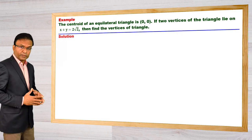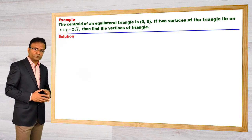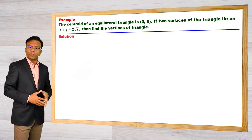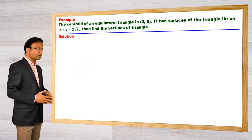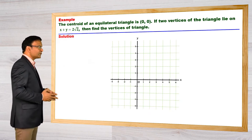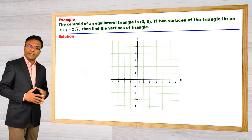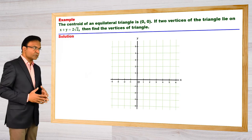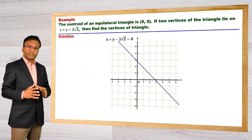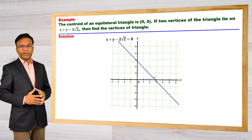We have here an equilateral triangle. One of the sides of the triangle is given. It is better if I start by putting this data on a coordinate axis. Let us draw the line x + y − 2√2 = 0. The slope of this line is −1, so the angle of this line with the positive direction of the x-axis is 135 degrees.